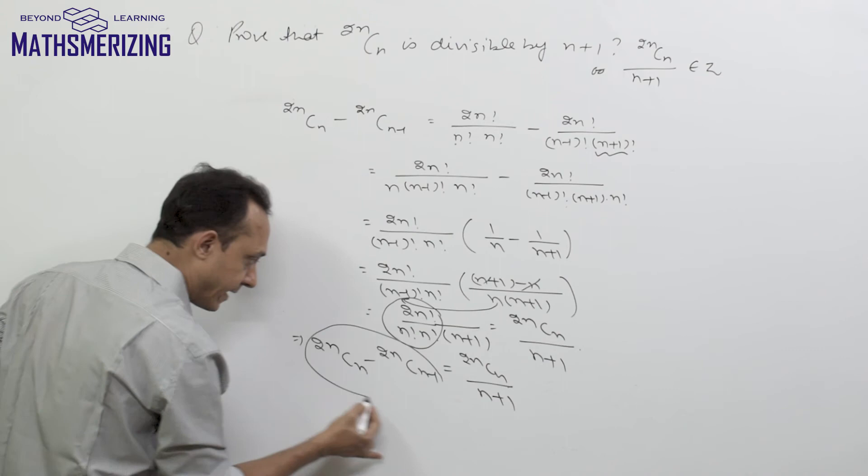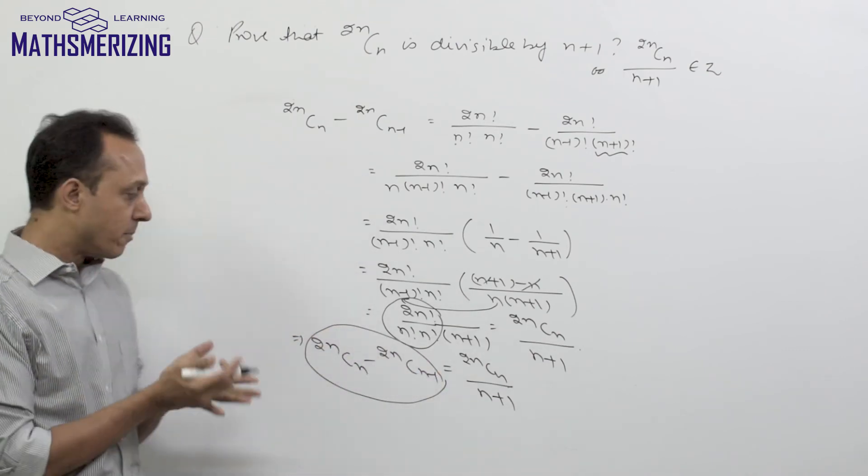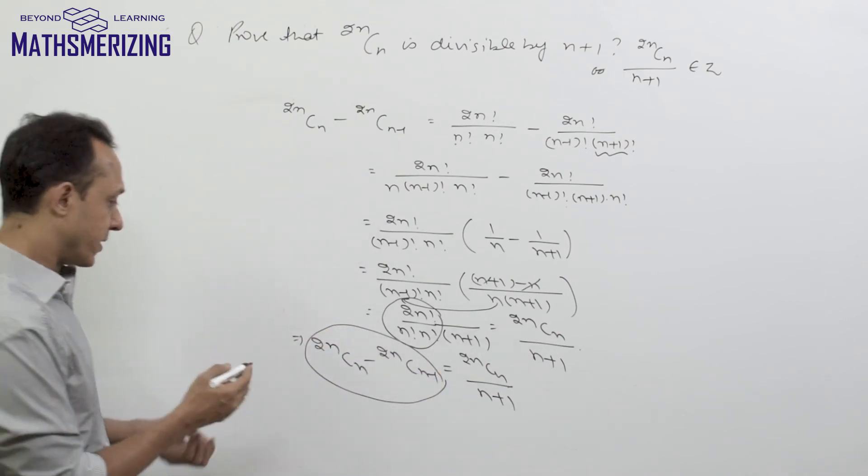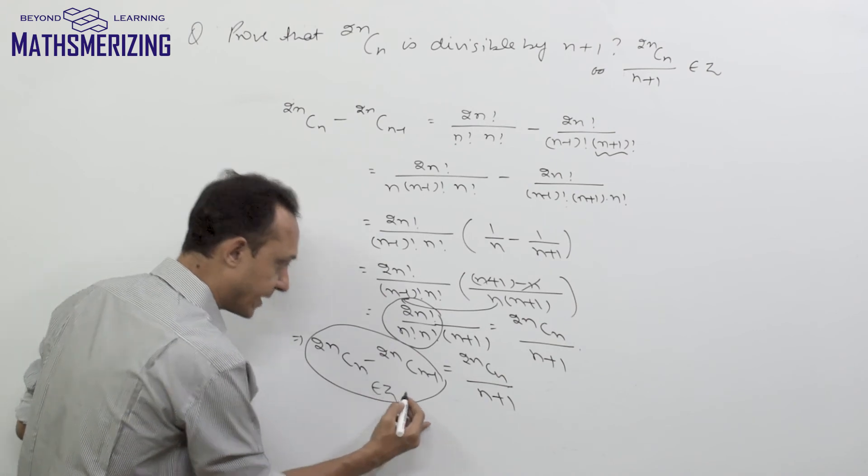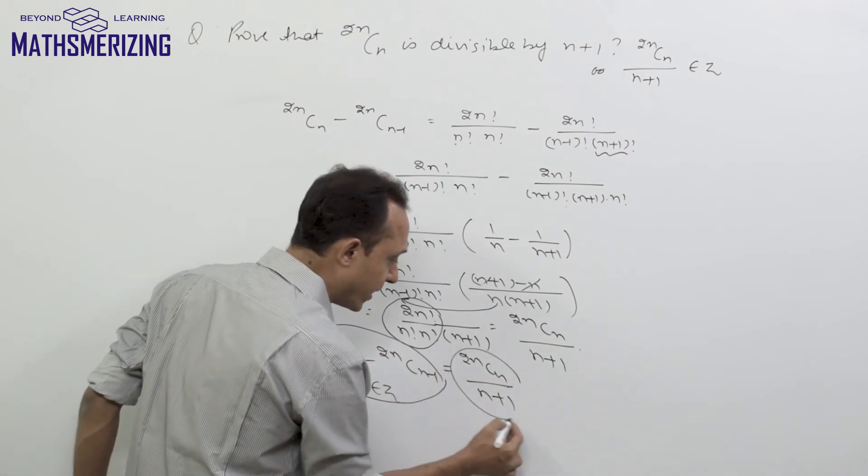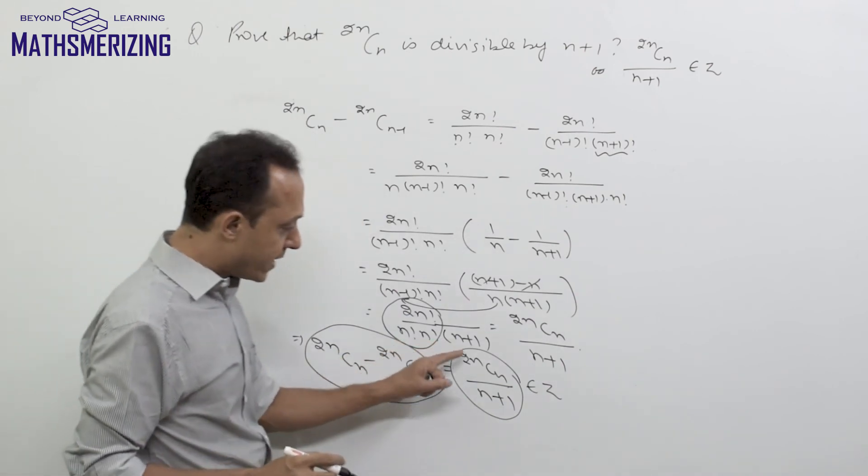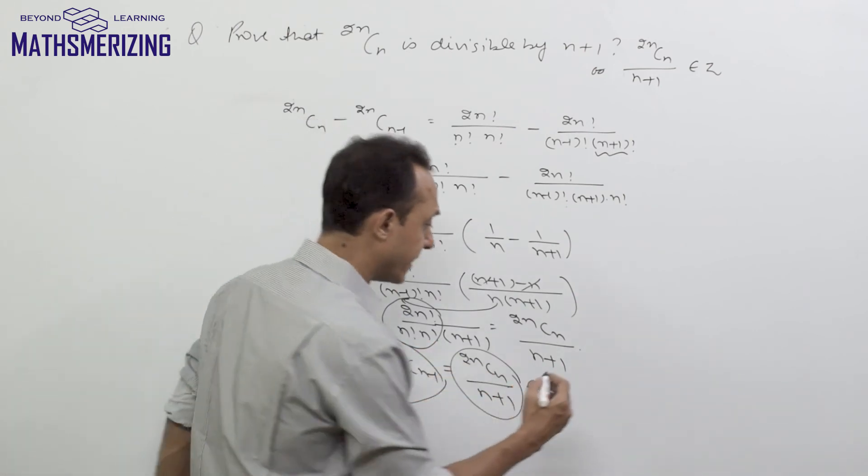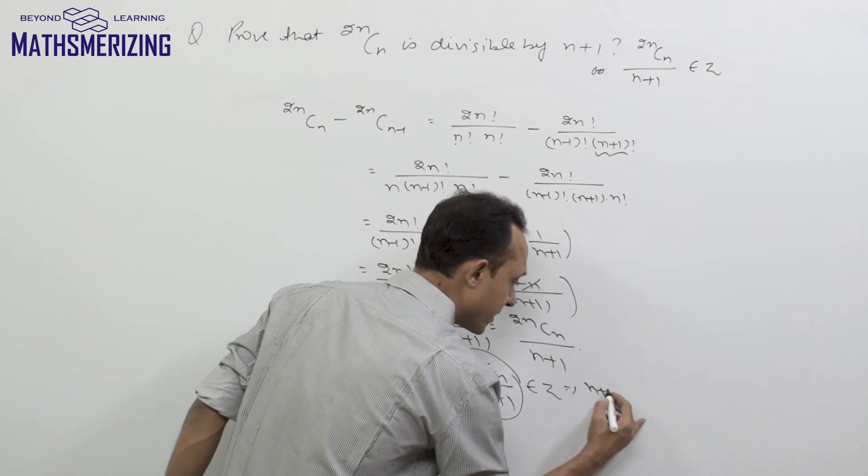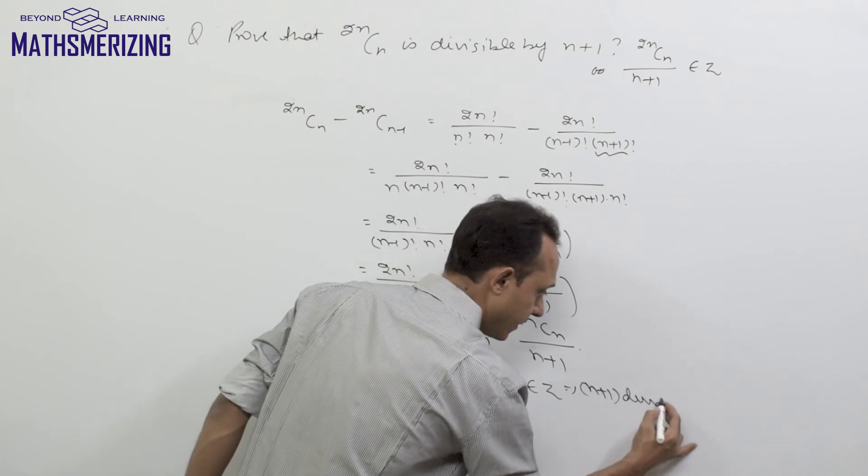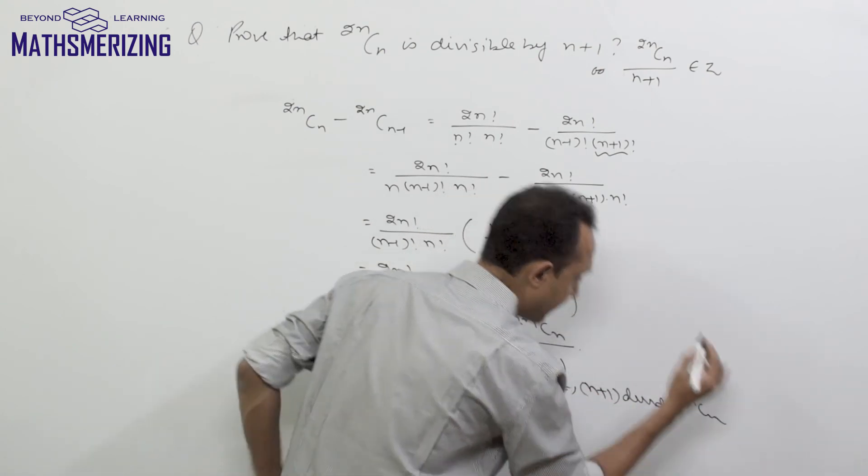Now on the left hand side, I have two binomial coefficients and binomial coefficients are integers. So the left hand side is an integer. Therefore, 2nCn/(n+1) should also be an integer, which means (n+1) divides 2nCn.